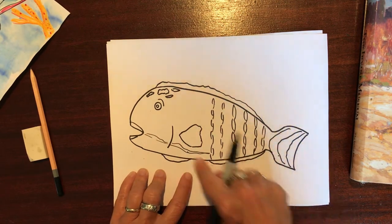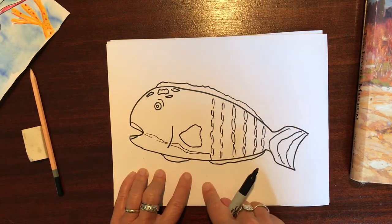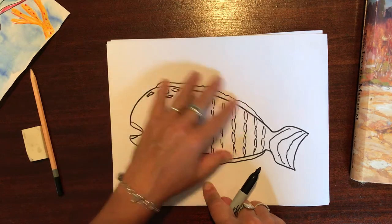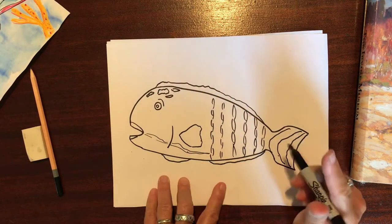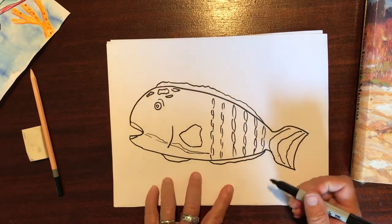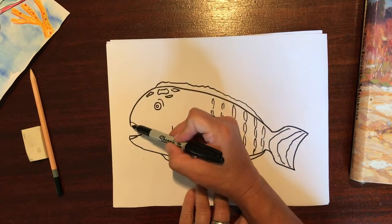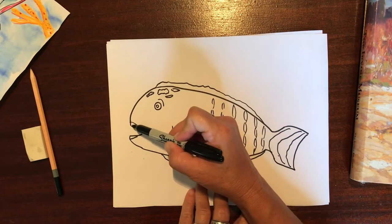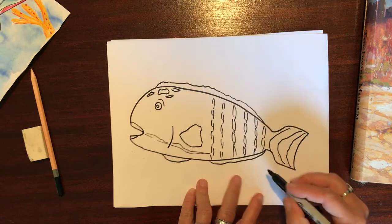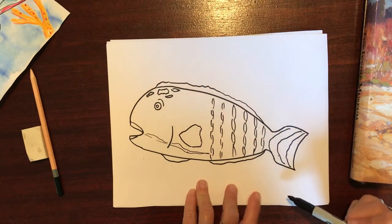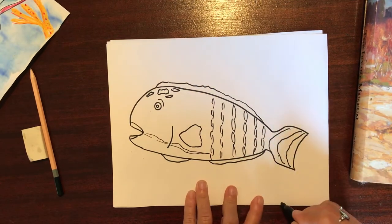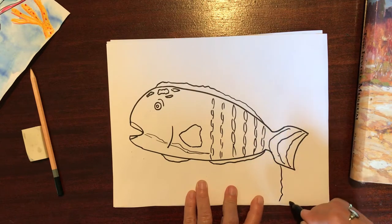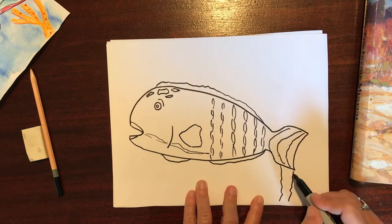And if you want, remember I said that the parrotfish lives on the coral reefs, and that's why he has these hard teeth right here to peck the really hard coral to eat. If you want to add some coral, it's another little free form tree shapes going up.